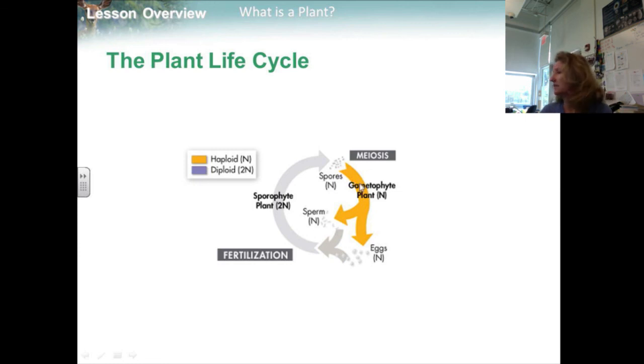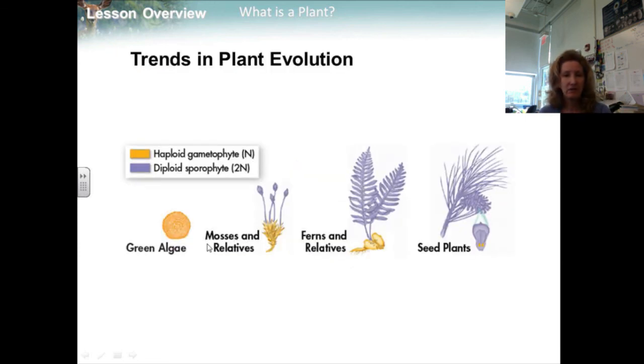An important trend in plant evolution is the reduction in size of the gametophyte and the increasing size of the sporophyte.